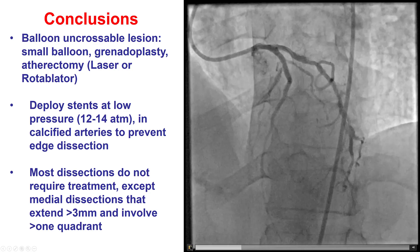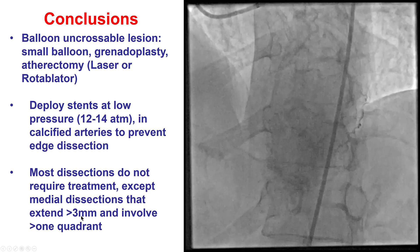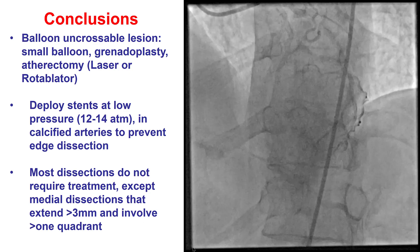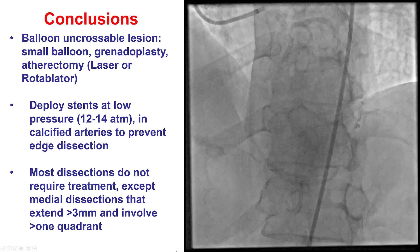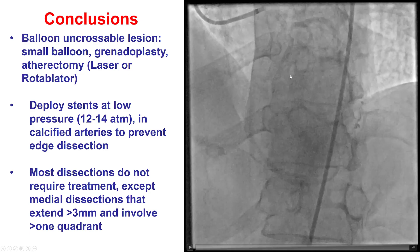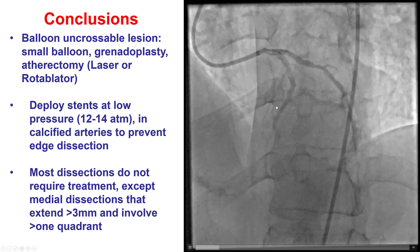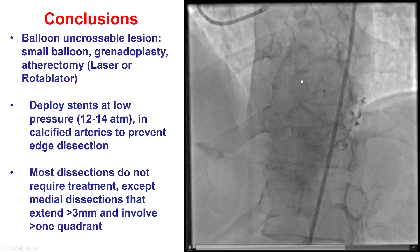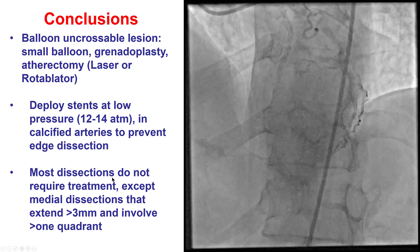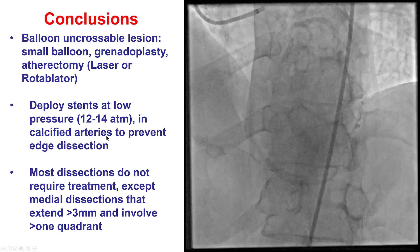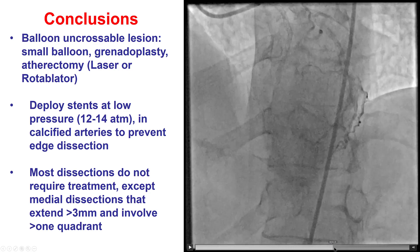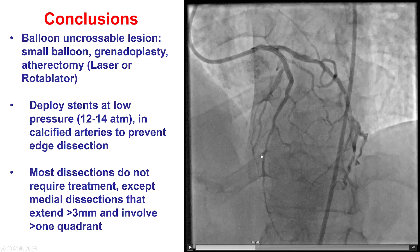Most dissections do not require treatment; however, if it is more than 3 mm in length and involves more than one quadrant, then stenting makes sense to minimize propagation. In summary: heavily calcified tortuous lesions are at high risk of acute vessel closure. Wiring was successful using a polymer-jacketed wire into the side branch, then a dual lumen microcatheter. It is important to follow the algorithm for balloon-uncrossable lesions, meticulously prepare the lesion, and use intravascular imaging to ensure a good final result.